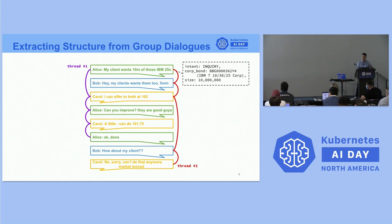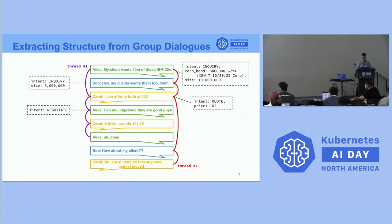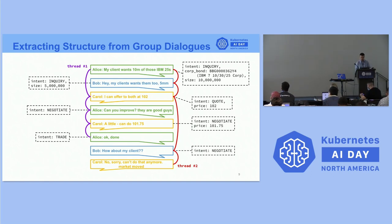You have at least two threads in that conversation — a structure you can extract from those dialogues. In the first post we can detect an inquiry intent and a particular bond to link to our knowledge bases. When they say 'IBM 25s,' they mean an IBM bond with coupon 7, expiring October 2025. When they say '10M,' that's 10 million. The second post has an inquiry intent with a different size; the third gives a quote with a price; negotiation follows; a trade is confirmed; then Bob tries again but there's no trade.